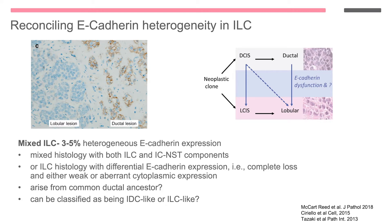The evolution of these mixed tumours is thought to occur via a DCIS precursor, where they then lose e-cadherin. But we also see mixed tumours with ILC histology that retain e-cadherin expression or have weak or aberrant cytoplasmic expression of e-cadherin, juxtaposed next to a bona fide lobular breast cancer with loss of e-cadherin. We were particularly interested in studying these tumours and asking: do they arise from a common ductal ancestor, can we classify them as IDC-like or ILC-like, and what genomic alterations are unique between the different components?